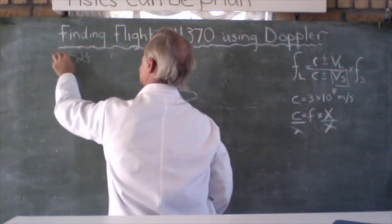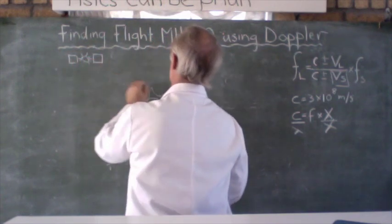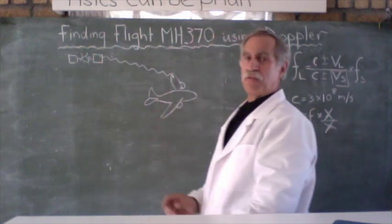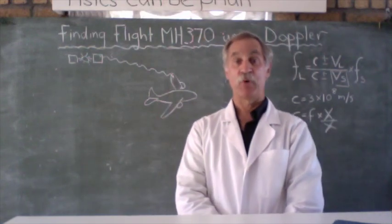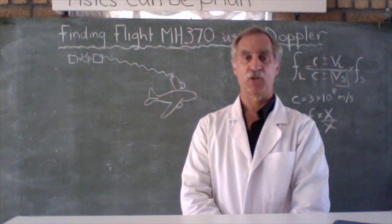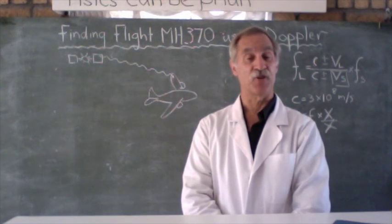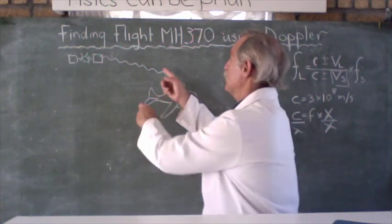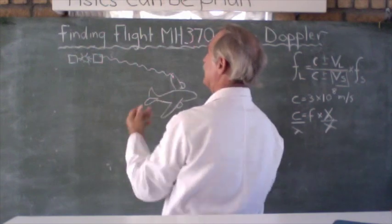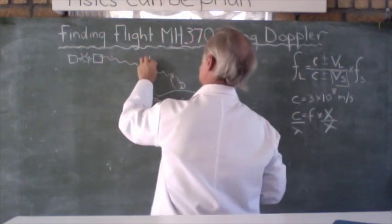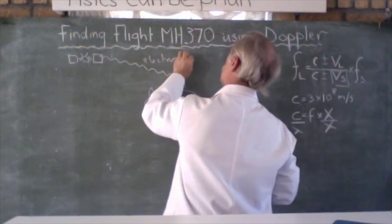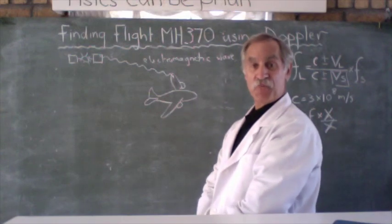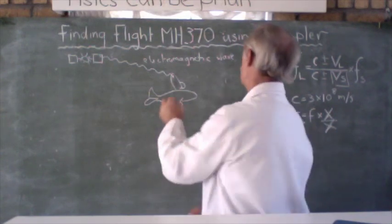So here's the satellite. Let's give it some solar panels. And this ping was of a certain frequency. And every hour for five hours this plane pinged. And after that there were no more pings so they could assume the plane had crashed. Now the scientists know is that this ping is an electromagnetic wave.